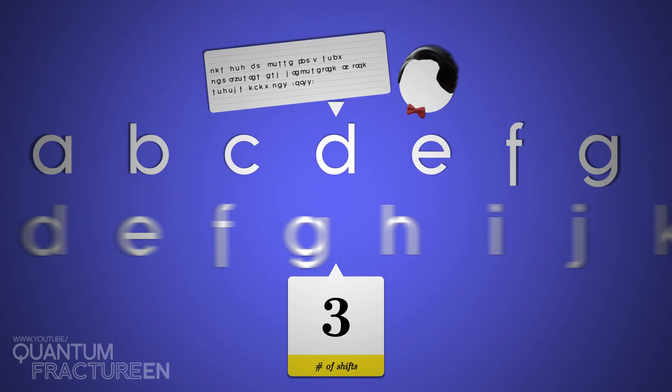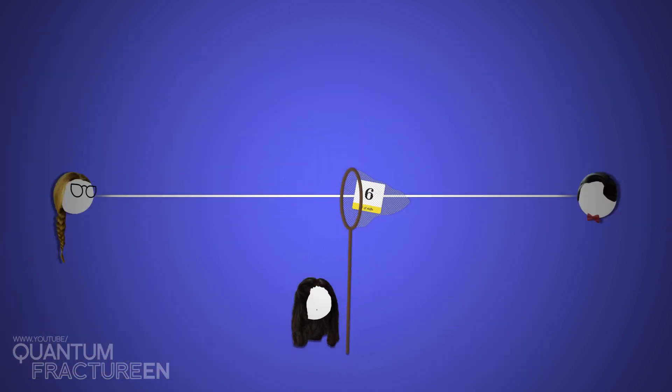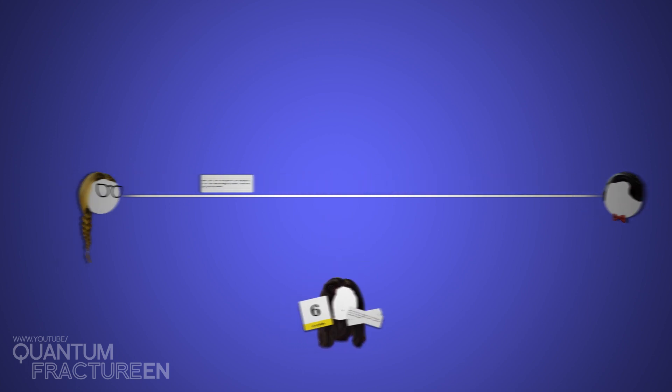The first is that Bob needs the key. He has to know how many times he's got to shift the alphabet, which means Alice must get it to him somehow. If Eve gets a hold of it, game over. The real danger is that Eve might intercept the key without Bob or Alice realizing that a third person knows it. They'd think they have a secure channel of communication when in fact, Eve has installed a bug and can spy on them whenever she wants.